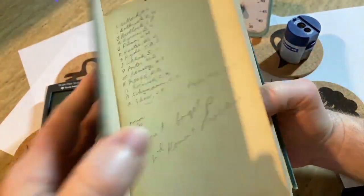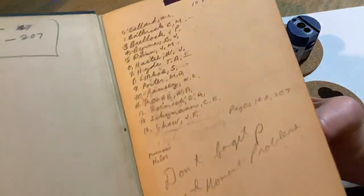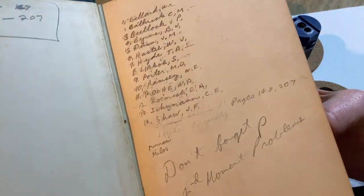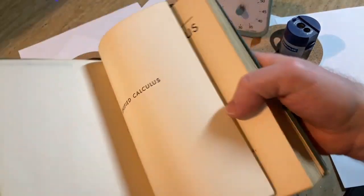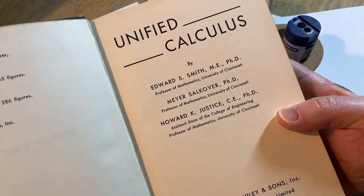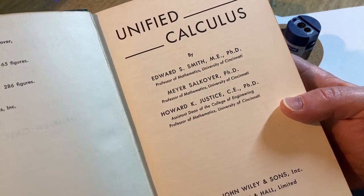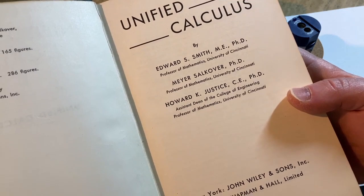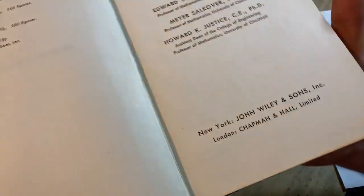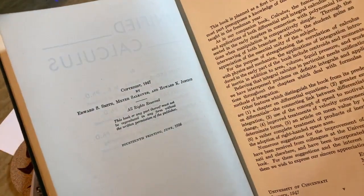Let's open it up and just take a look inside. Looks like the previous owner wrote a bunch of stuff in it, names and symbols. Unified Calculus by Edward Smith M.E. Ph.D., Meyer Sackover Ph.D., Howard Justice Ph.D., all from the University of Cincinnati. I'm pretty sure this is from the 40s. Yeah, copyright 1947.